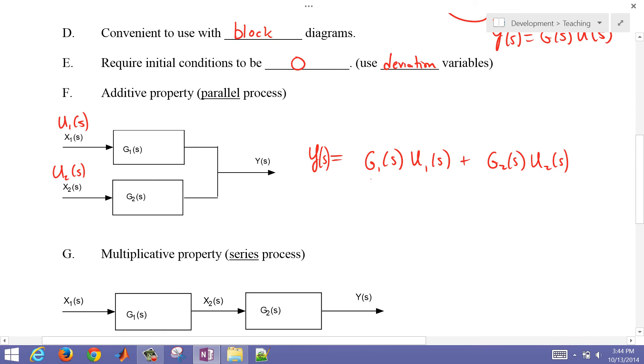So you can add signal 1 and this could be called x1 on these intermediate terms here. So this could be called x1 of s, and this could be x2 of s.